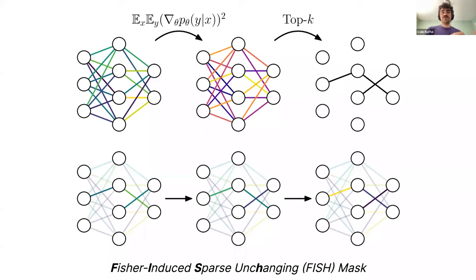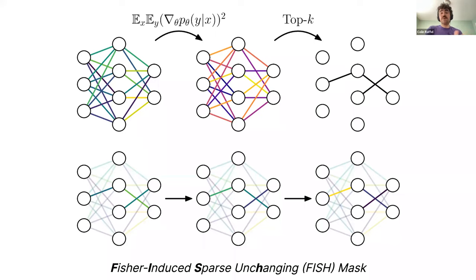Some of you might be thinking this sounds like the lottery ticket hypothesis or sparse networks, but we're not computing a sparse model — we're just computing sparse updates to the model's parameters. It's not true that most of the model's parameters are zero; we're just not updating most of them, leaving them fixed over a certain number of iterations of training. This is different from parameter efficient transfer learning, where the goal is to update as few parameters as possible and still get good performance on a downstream task.